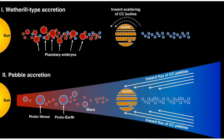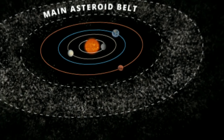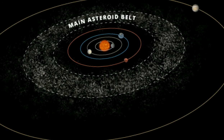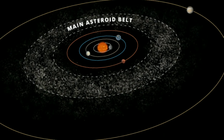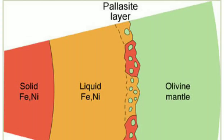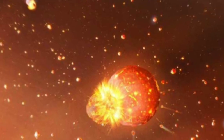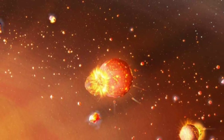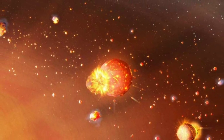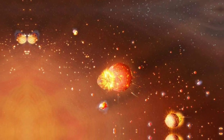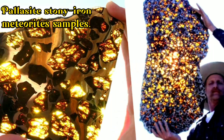However, other scientists think that there are very few olivine-rich meteorites in the asteroid belt, and too many pallasite meteorites for them all to have come from a core-mantle boundary. These types of formations may also be formed by impact melting. Here are some sample images of pallasite-type stony iron meteorites.